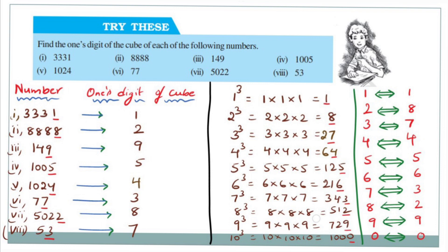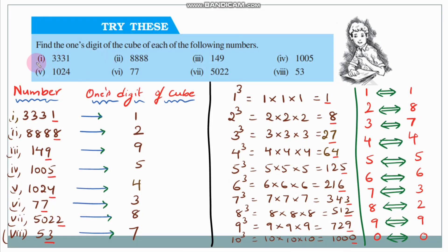Find the units digit of the cube of each of the following numbers. To find the answer, we will first look at the cubes of numbers 1 to 10, which will help us determine the units digit without going through the full multiplication.